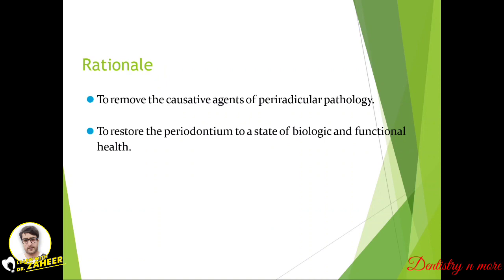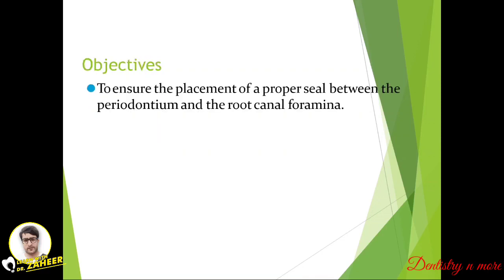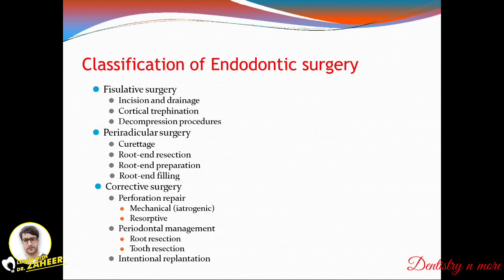Ingle defined it as a surgical procedure related to problems of the pulpless or periodontally involved tooth requiring root amputation and endodontic therapy. The rationale is to remove the causative agents for the peri-radicular pathology — that is, the focus of lesion — and also to restore the periodontium to a state of biologic and functional health. The main objective is to ensure the placement of a proper seal between the periodontium and the root canal.